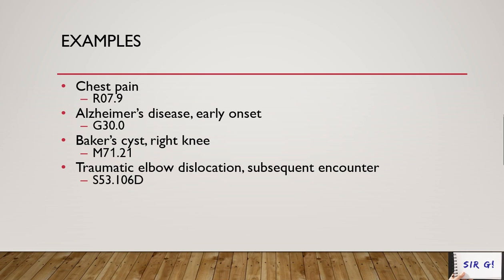Note that the code S53.106D has a letter at the beginning and a letter at the end — I will explain the format of codes when discussing the tabular list. The last example: acute myocardial infarction (heart attack). Your main term is 'infarction' or you may try 'myocardial.' The correct code for acute myocardial infarction, unspecified is I21.9.